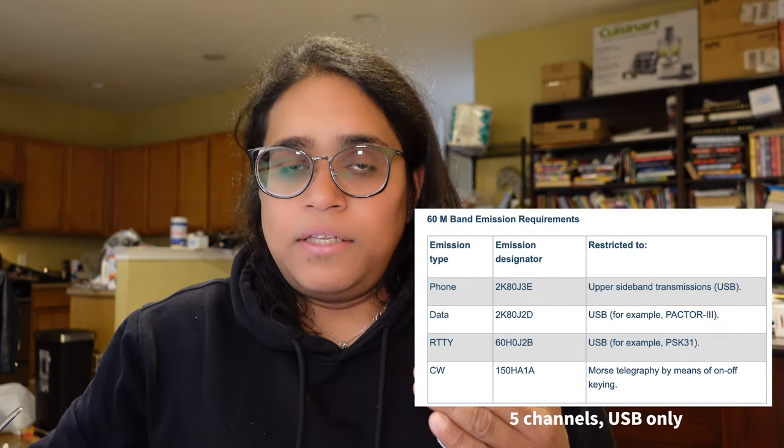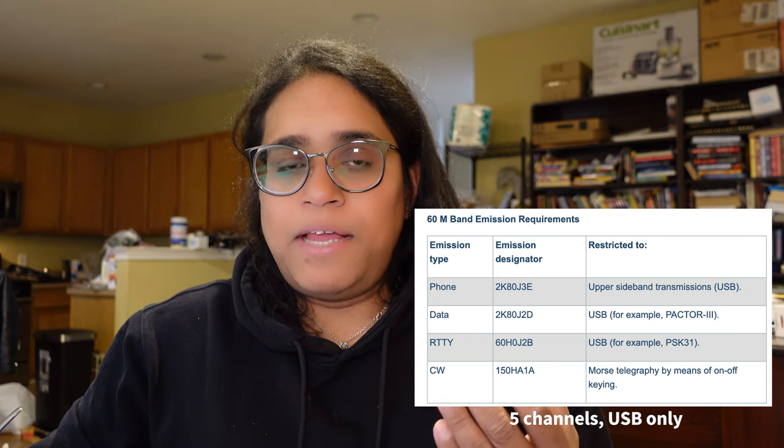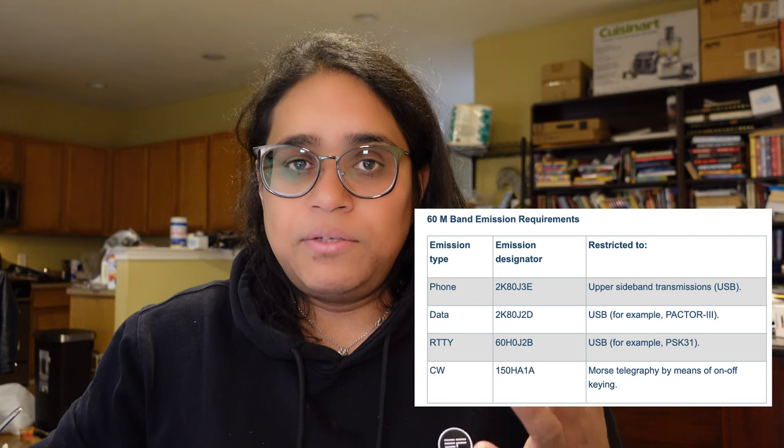There are two exceptions to this. One of them is 60 meters — on 60 meters you're only allowed to use upper sideband, and that is in the FCC rules. The reason is that the government uses this band, and we share it on a secondary basis with them. They're on upper sideband, and we need to hear them and they need to hear us, so we must be on upper sideband.